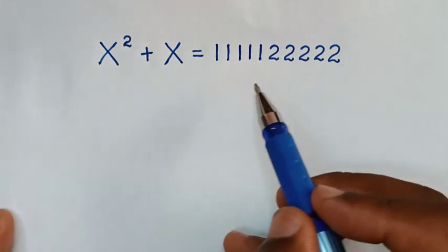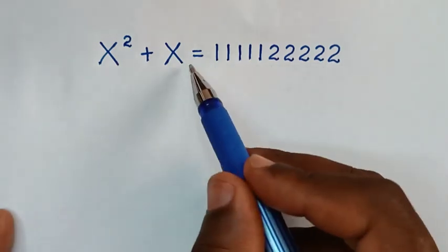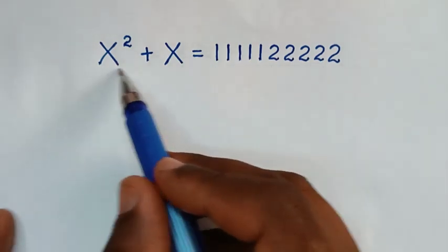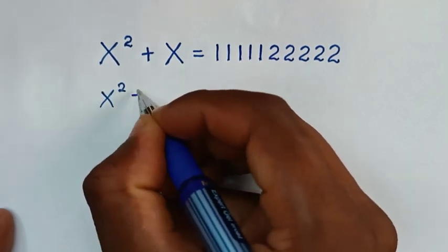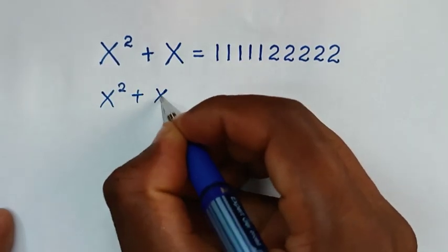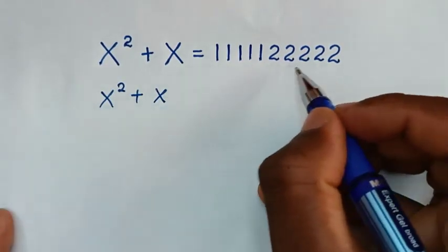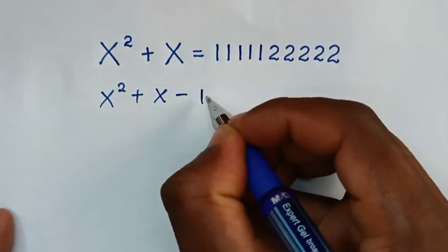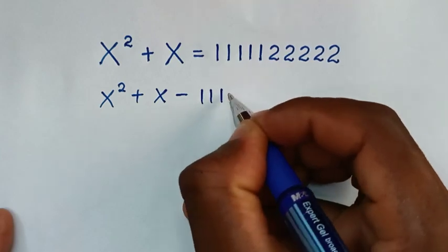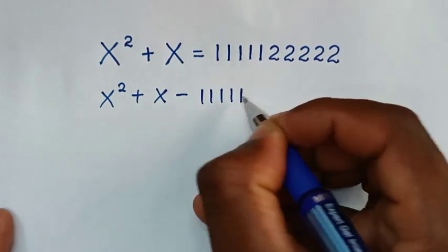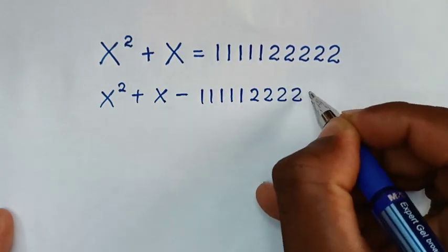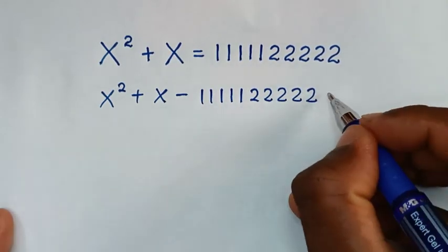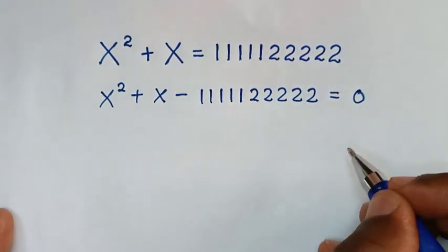Now in the first step, we'll take this long number to the left side. So it will be x squared plus x minus 1,111,122,222 is equal to 0.